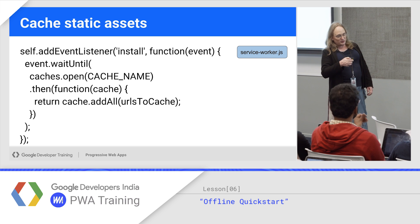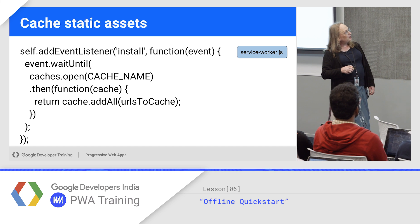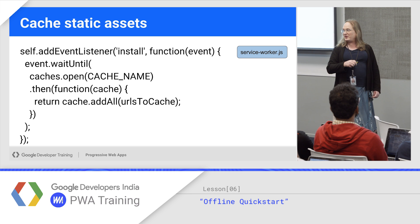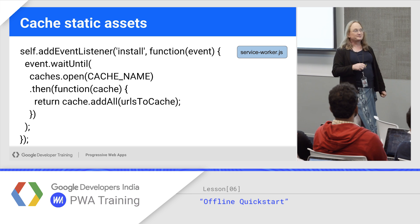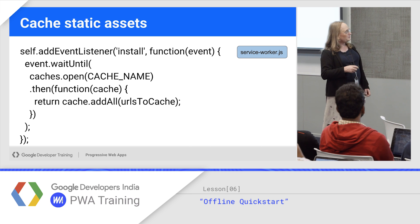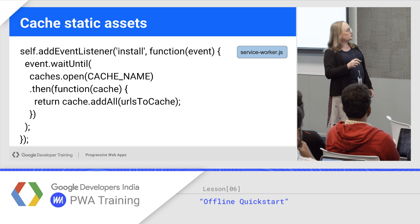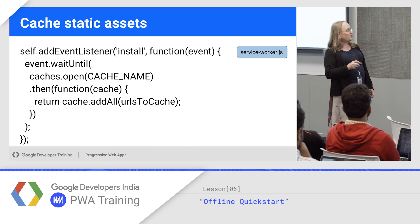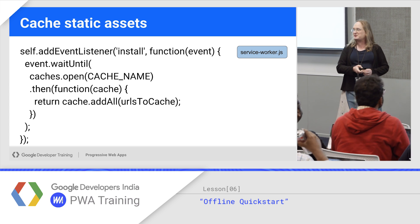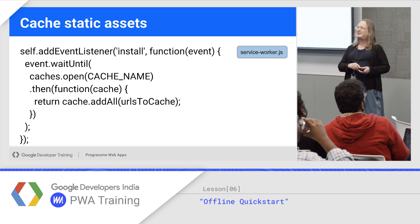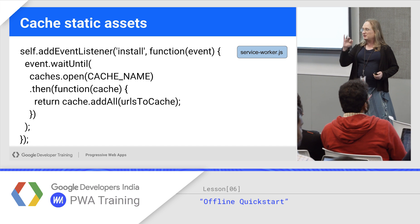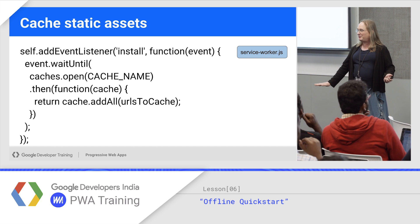On install, use event.waitUntil — remember, that keeps the service worker from going to sleep. Open the cache, which returns a promise. When that's open, you get the cache object and you just call addAll with those URLs. It goes out, grabs everything from the network, and stores it. Really simple.